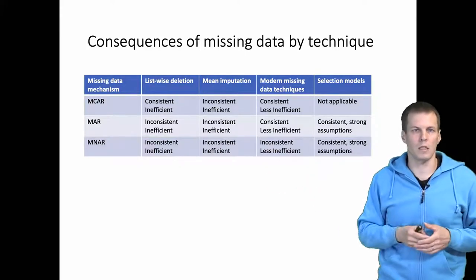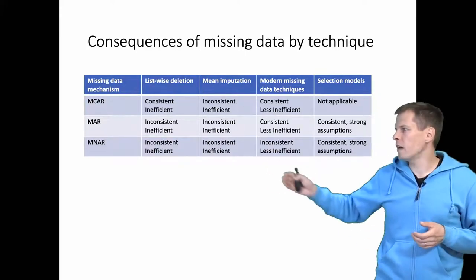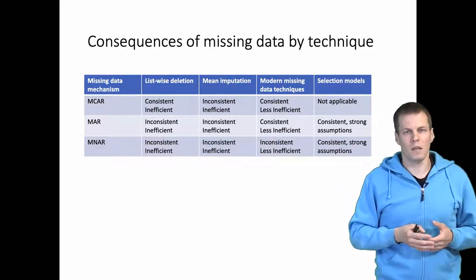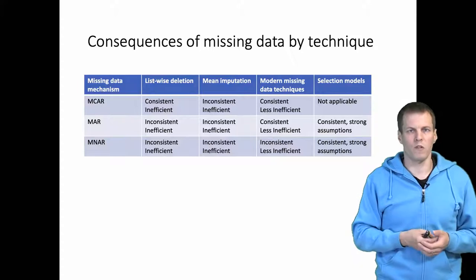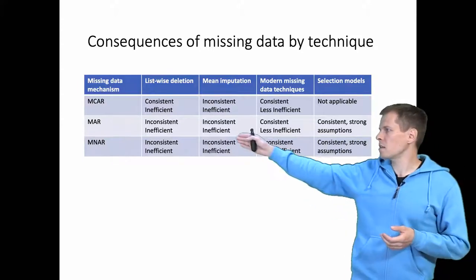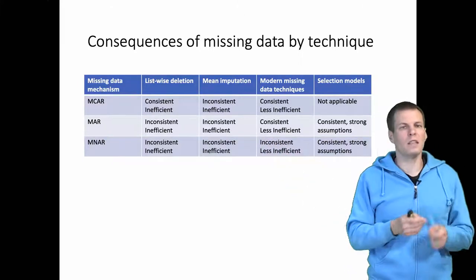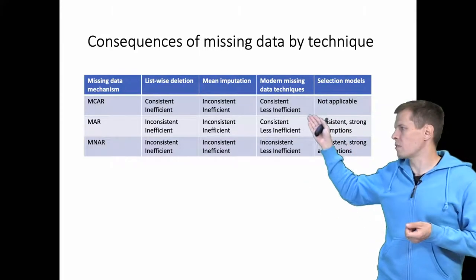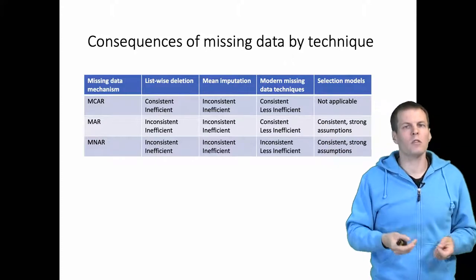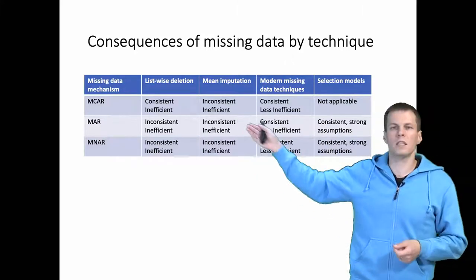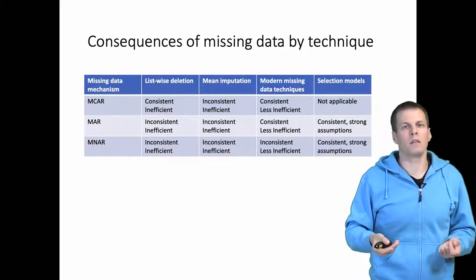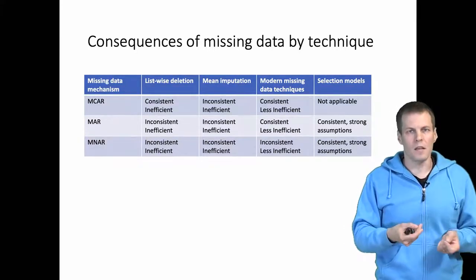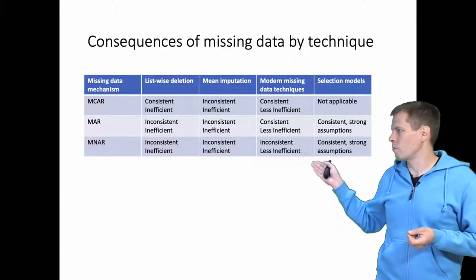If data are missing completely at random, the data are basically a smaller sample of what we would have had. In that case, listwise deletion is consistent but inefficient, because we can get more precise estimates using modern missing data techniques. Mean imputation is always inconsistent and inefficient — we get results that are systematically incorrect and less precise than what we would get using modern missing data techniques.